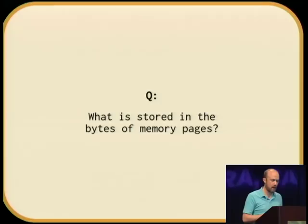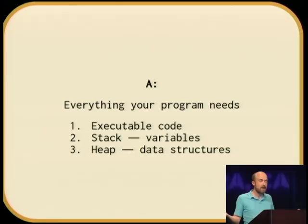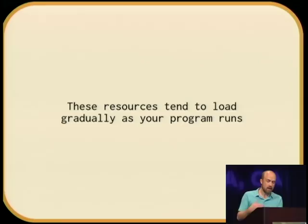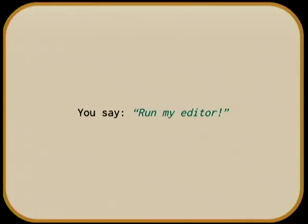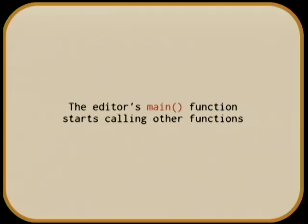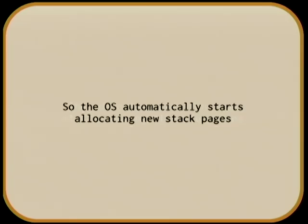What kinds of things get stored in the bytes of these memory pages? Everything your program needs: the executable code itself, the stack of function calls that are currently underway, the heap with all of your data structures — lists and dictionaries. These resources tend to load gradually as your program runs. Imagine running your editor. You say run my editor, and the OS loads it into memory along with any libraries it might require, taking up a few pages of memory.